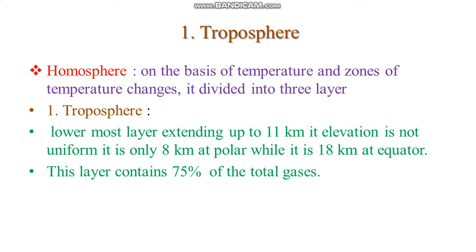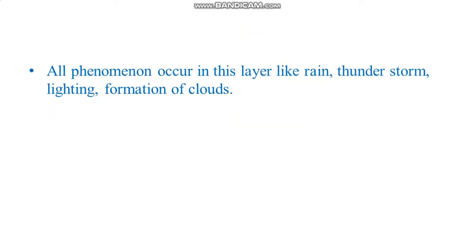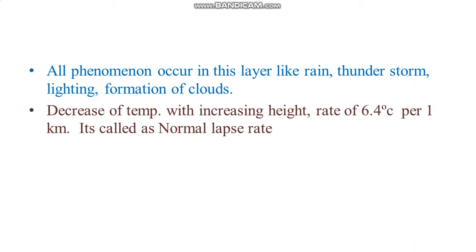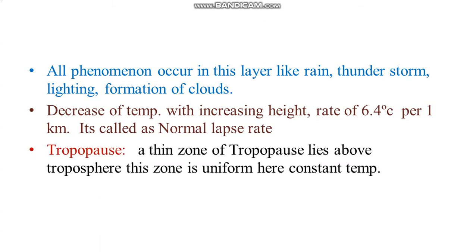This layer contains 75% of the total gases. All weather phenomena occur in this layer, like rain, thunderstorms, lightning and formation of clouds, and convection processes. The decrease of temperature with increasing elevation, called the normal lapse rate, is 6.4 degrees Celsius per 1 km. Above the troposphere lies a thin zone called the tropopause, which has a constant and uniform temperature.